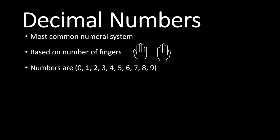So the numbers of the decimal system are 0, 1, 2, 3, 4, 5, 6, 7, 8, 9, which are the numbers that we use in our daily life.